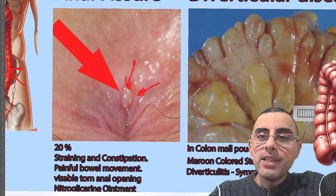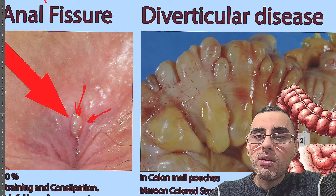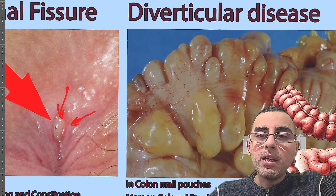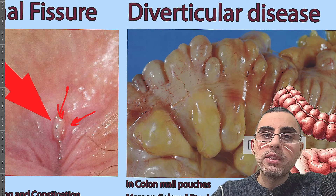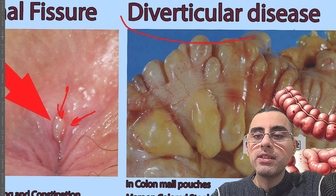In many cases, a visible tear is present around the anal opening. Nitroglycerin ointment is a treatment that helps heal the physical trauma. Eating dietary fibers, fruits and vegetables, and staying hydrated are also part of treatment.